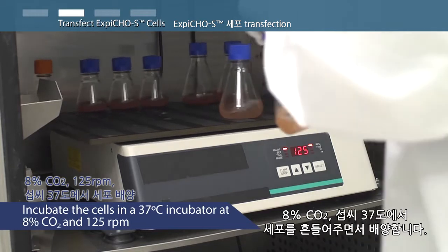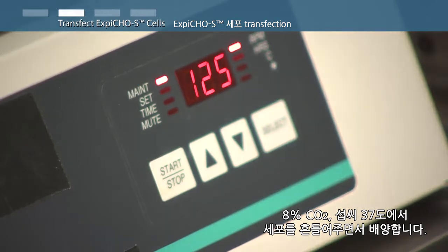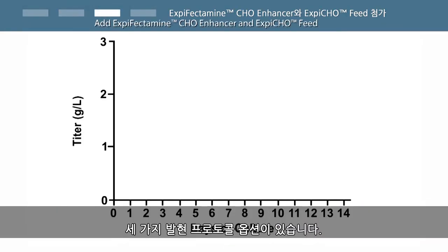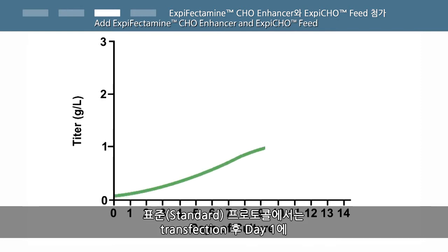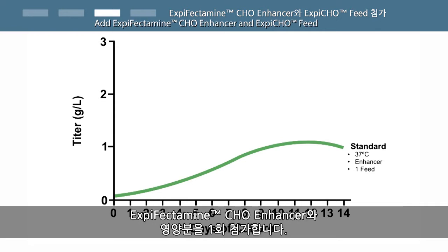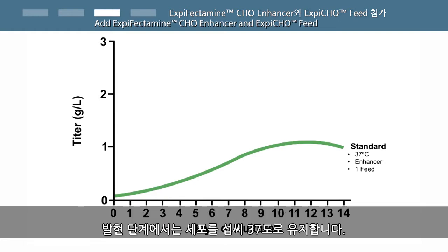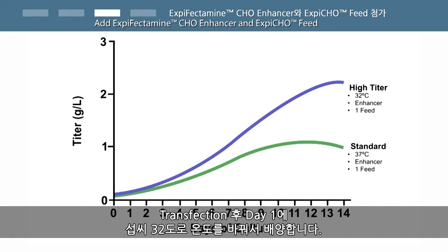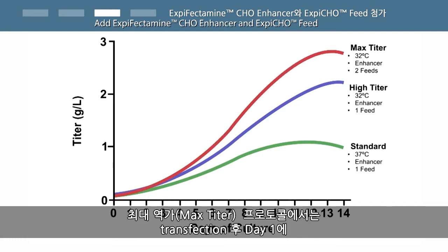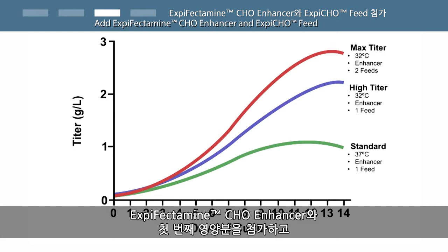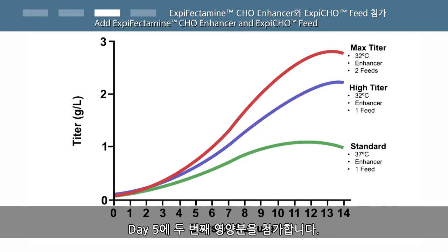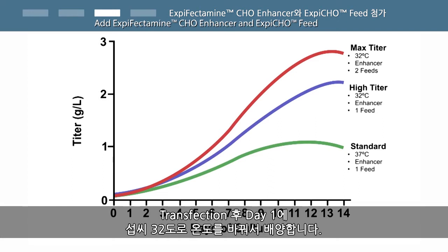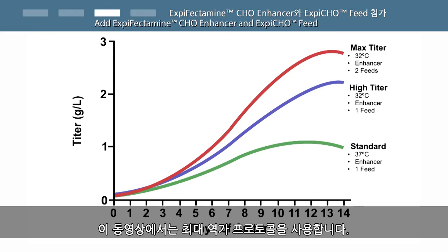Incubate the cells at 37 degrees Celsius with 8% carbon dioxide and shaking. For maximal flexibility, the XBCHO expression system offers 3 different expression protocol options. The standard protocol has an addition of XBCHO enhancer and a single feed on day 1 post-transfection, with cells maintained at 37 degrees Celsius throughout. The high titer protocol also adds XBCHO enhancer and a single feed on day 1, then shifts cells to 32 degrees Celsius on day 1 post-transfection. The max titer protocol adds XBCHO enhancer and a first feed on day 1, followed by a second feed on day 5, with cells shifted to 32 degrees Celsius on day 1. In this video, we will follow the max titer protocol.